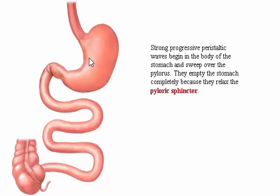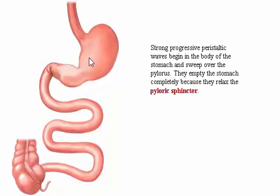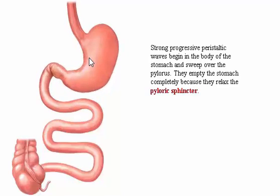Strong progressive peristaltic waves begin in the body of the stomach and sweep over the pylorus. They empty the stomach completely because they relax the pyloric sphincter. This accounts for the forward progress of large objects, like a swallowed penny, through the GI tract.